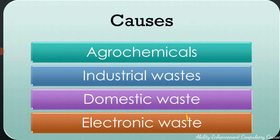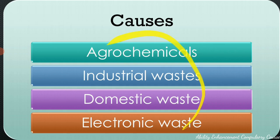Lastly, we have electronic waste, that is e-waste. These are non-biodegradable substances with a high content of lead, cadmium, or arsenic — for example, cell phones or any other electronic gadget. These constitute electronic waste and are among the different sources through which pollutants enter the soil.